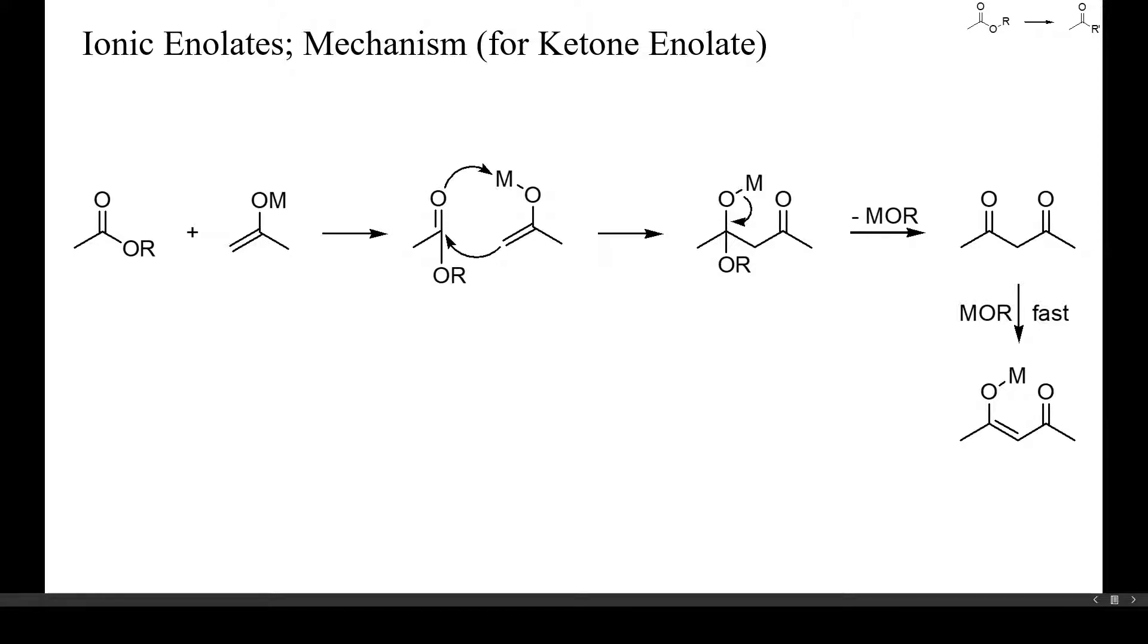Here you can see the mechanism of the acylation of a ketone enolate by an ester. Elimination of the metal alkoxide from the initially formed methylated hemiacetal yields a 1,3-diketone, which will be immediately deprotonated by the alkoxide. The released alcohol may protonate the starting enolate and an excess of enolate can therefore be helpful to drive these condensations to completion.